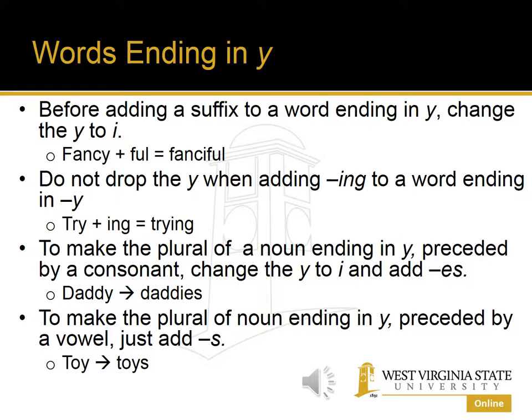But if we have a noun ending in Y that is preceded by a vowel or vowel sound, then we just add an S. For example, toy ends in Y, and the letter preceding the Y is a vowel — O — so to form the plural, we simply add an S: toys.